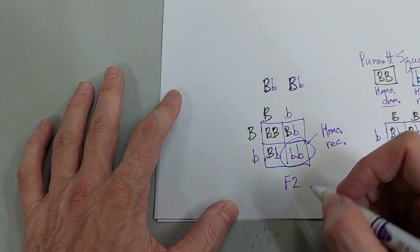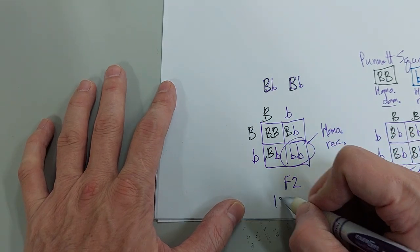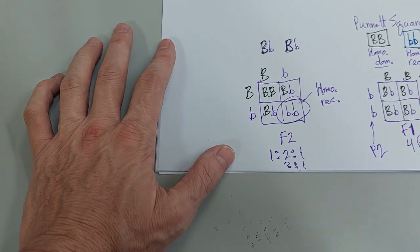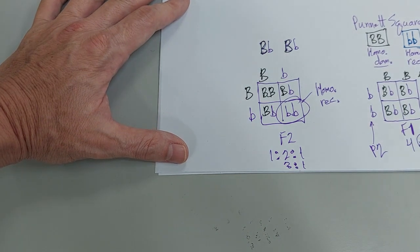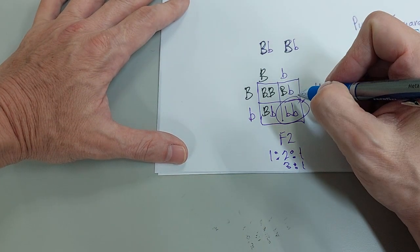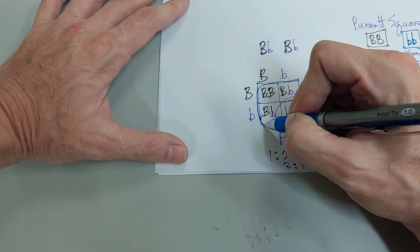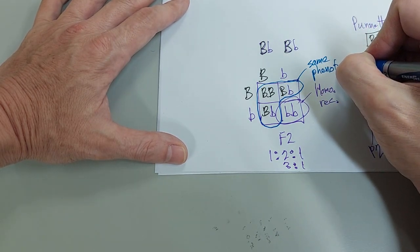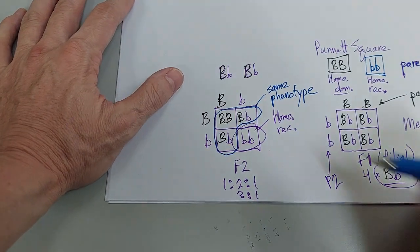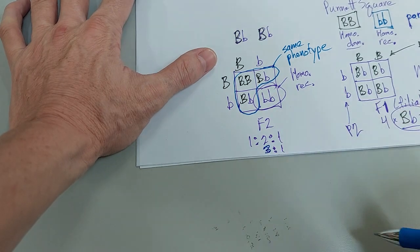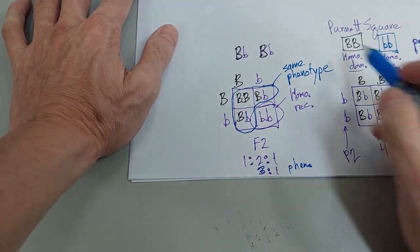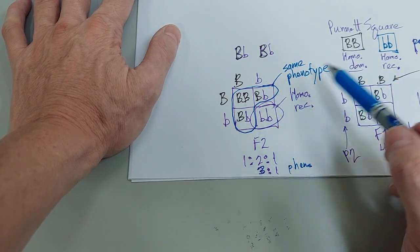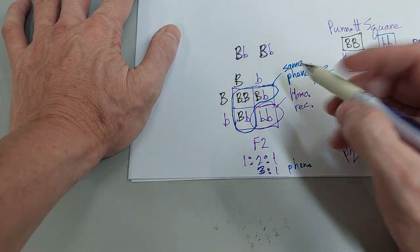So this is where we essentially get this 1 to 2 to 1 ratio. And if you see that simplified further, you'll see a 3 to 1 ratio. So the 3 to 1 ratio appears in the phenotypes. All of these are going to show the same phenotype. We're dealing with a dominant recessive situation here. So three of these are going to show either the homozygous dominant phenotype or the heterozygous dominant phenotype. They're all going to have the same phenotype.